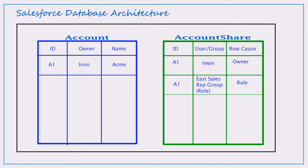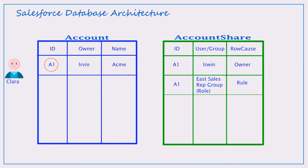The record A1, owned by Irwin, is in the account table. In the account share table, we have the record that gives access to Irwin as an owner, and a second record that gives access to his sales rep role via the sharing role. Clara, another sales rep from the East sales group, would like to access account A1 created by Irwin from the West sales group.